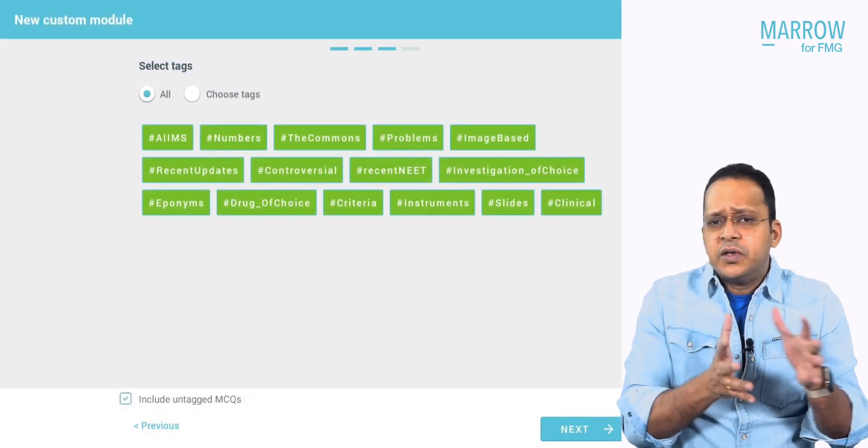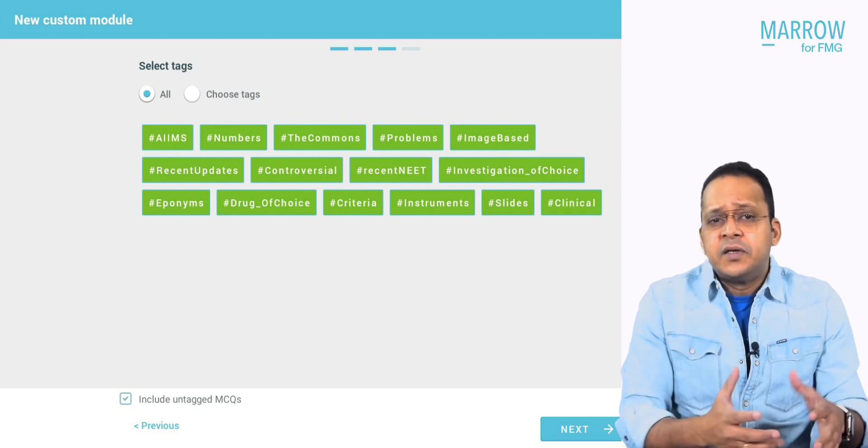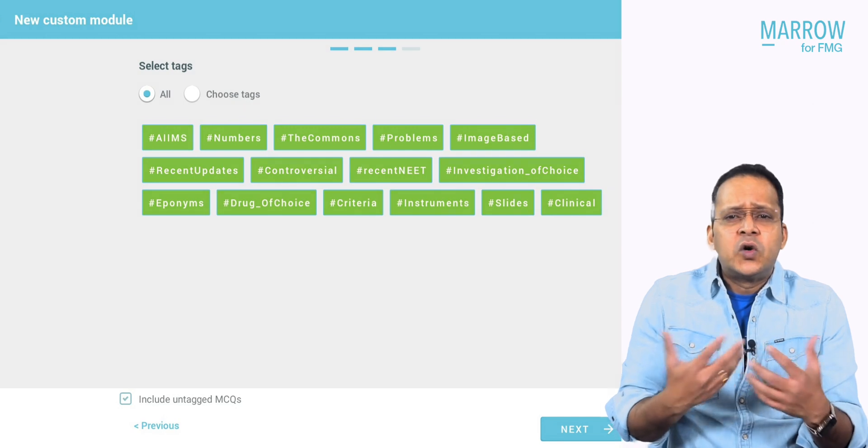Now coming to another important aspect — and it's a beautiful one, I love it the most — that is the tagging. Select the tags that are applicable or necessary for the FMG exam. This will help you filter out questions which are not necessary for FMG. You can deselect AIMS, deselect recent updates or controversial questions — focus on the basics. Also, if you're weak in a particular type, like numericals, you can select only numericals for pharma. If you're weak in drugs of choice, select drugs of choice. If you're weak in image-based MCQs, select image-based questions and do 10 IBQs every day — make it a custom habit, like your daily candy crush.